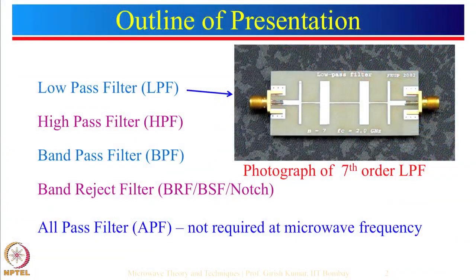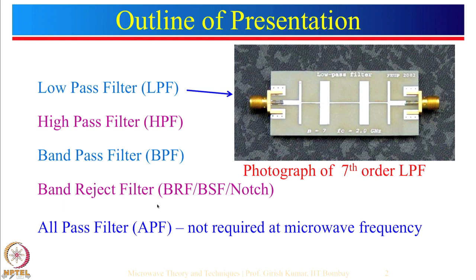A low pass filter is a filter which passes low frequencies, a high pass filter passes higher frequencies, a band pass filter passes a particular band of frequencies, and a band reject filter rejects a certain band. It is also known as a band stop filter, or sometimes a notch filter.